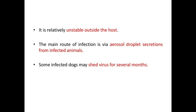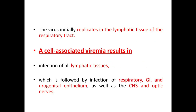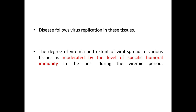The main route of infection is via aerosol droplet secretions from infected animals. Some infected dogs may shed virus for several months. The virus initially replicates in the lymphatic tissue of the respiratory tract, and a cell-associated viremia results in infection of all lymphatic tissues, followed by infection of respiratory, GI, and urogenital epithelium as well as the CNS and optic nerves. Disease follows viral replication in these tissues.